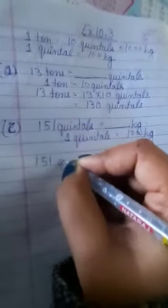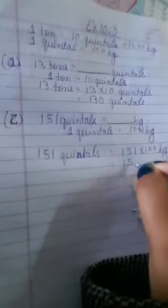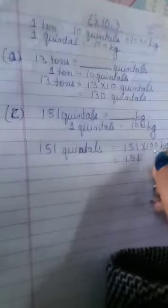In parts B and C, we have to convert quintals into kilograms. We know that 1 quintal equals 100 kg. For converting 151 quintals into kilograms, we multiply 151 by 100, so our answer will be in kilograms. It becomes 151 with two zeros added, giving us 15,100 kg.